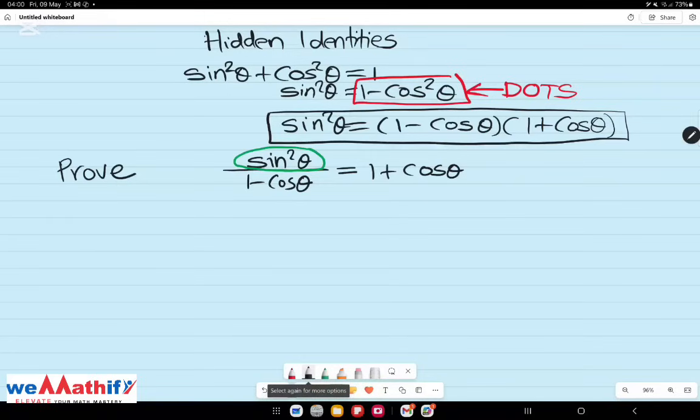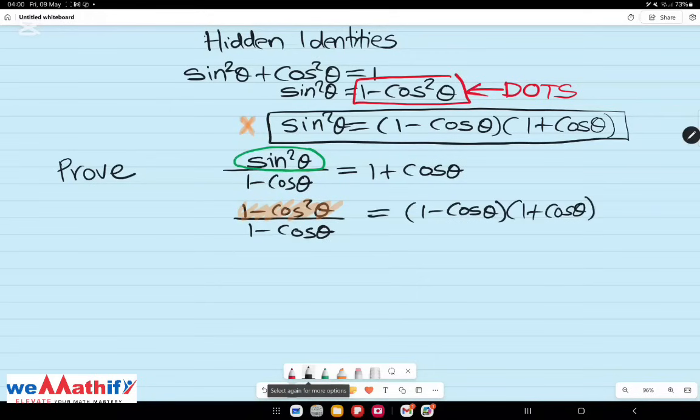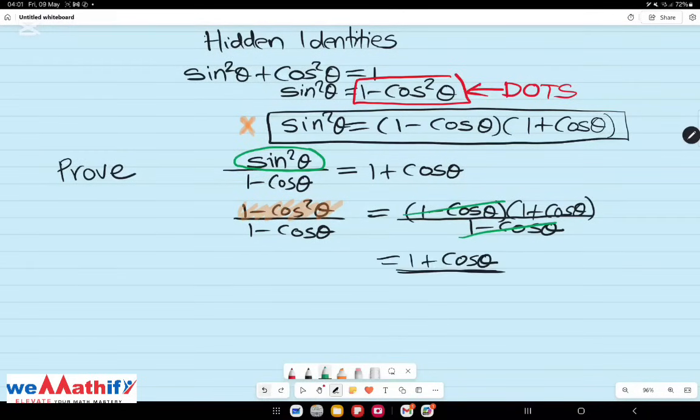So, I'm going to replace sine squared theta with 1 minus cos squared theta. Since we now know that 1 minus cos squared theta is a difference of two squares, we can now factorize it according to the rules for difference of two squares. And just like that, the identity is proven. And before we move on,